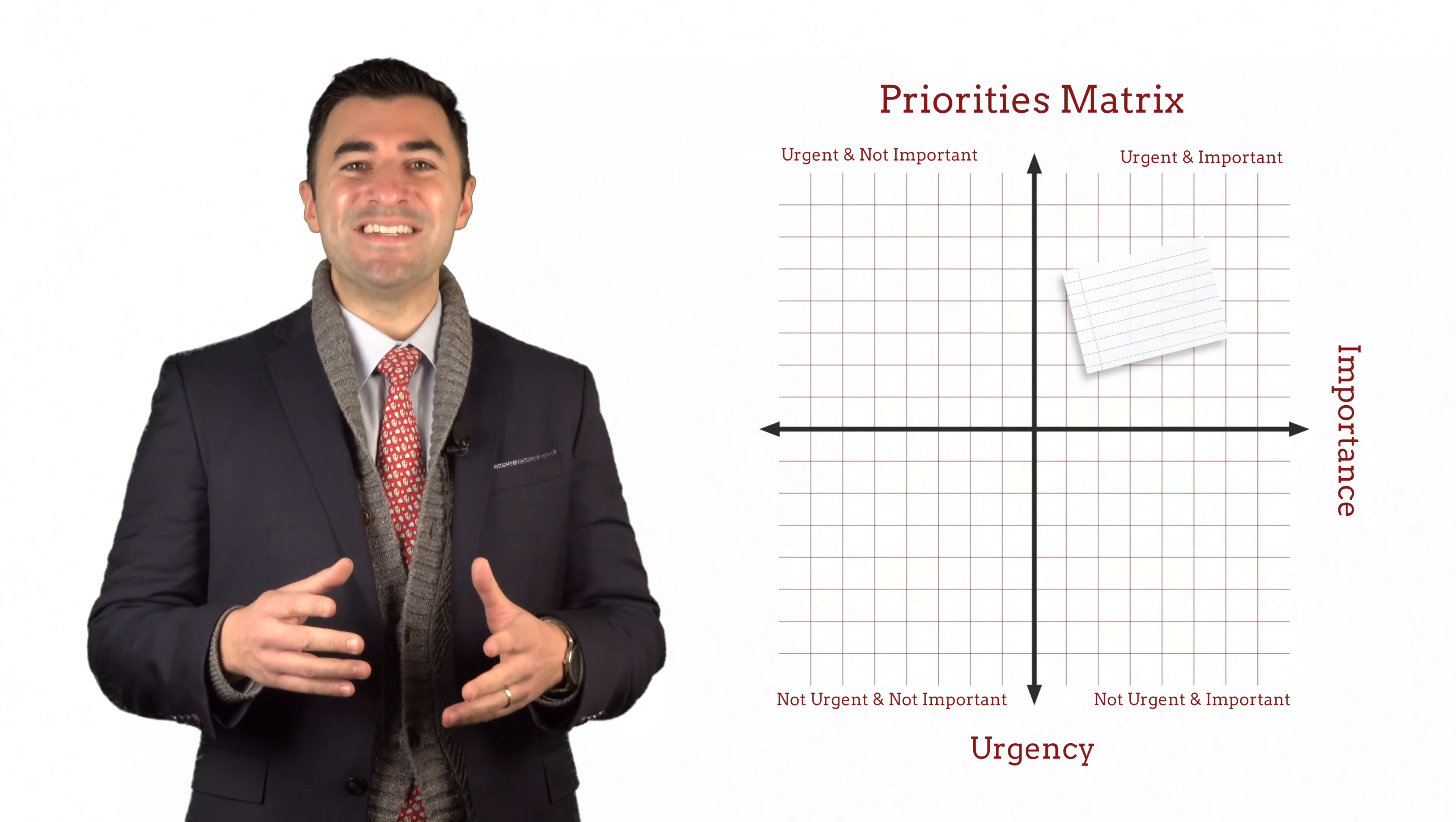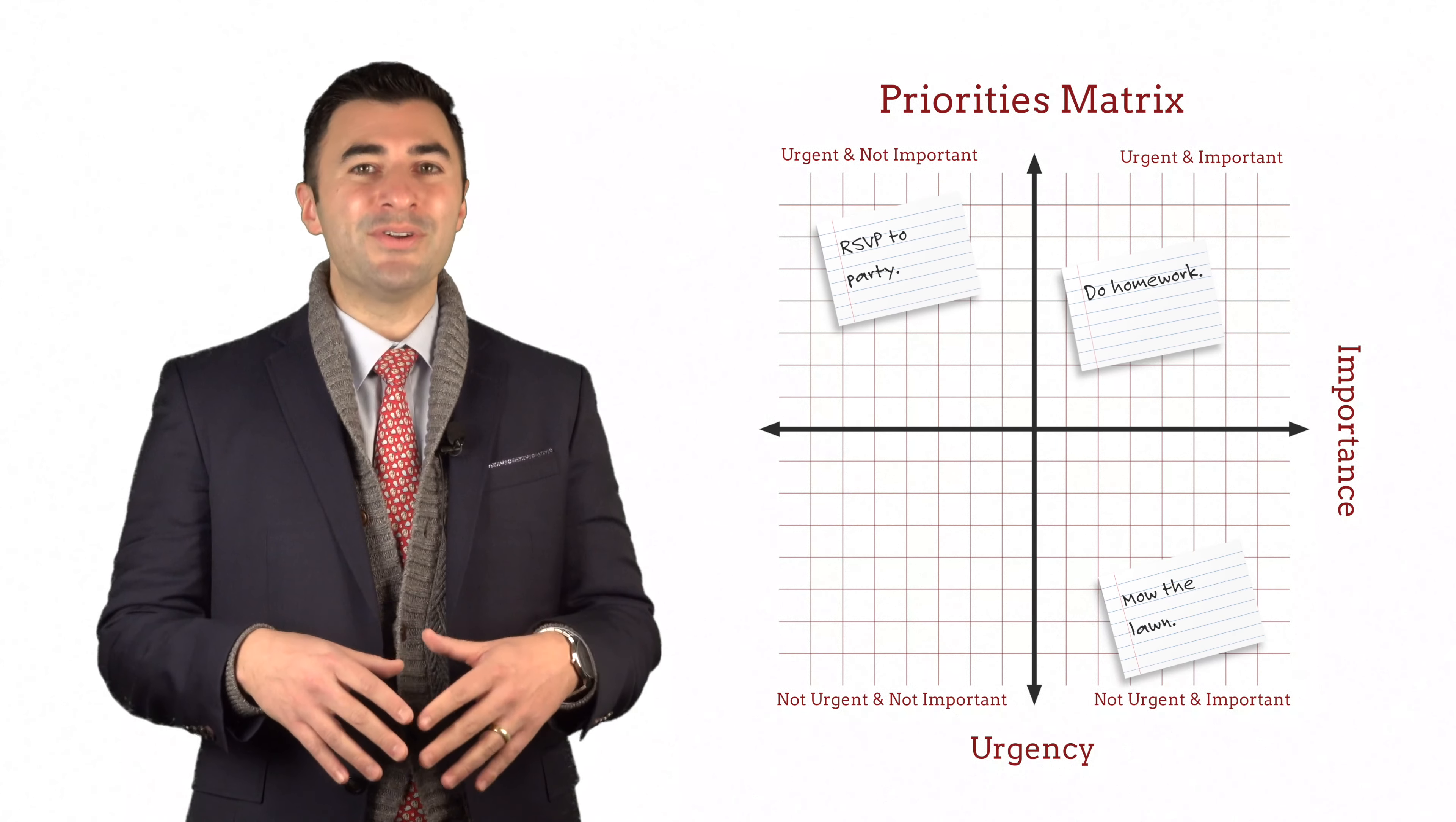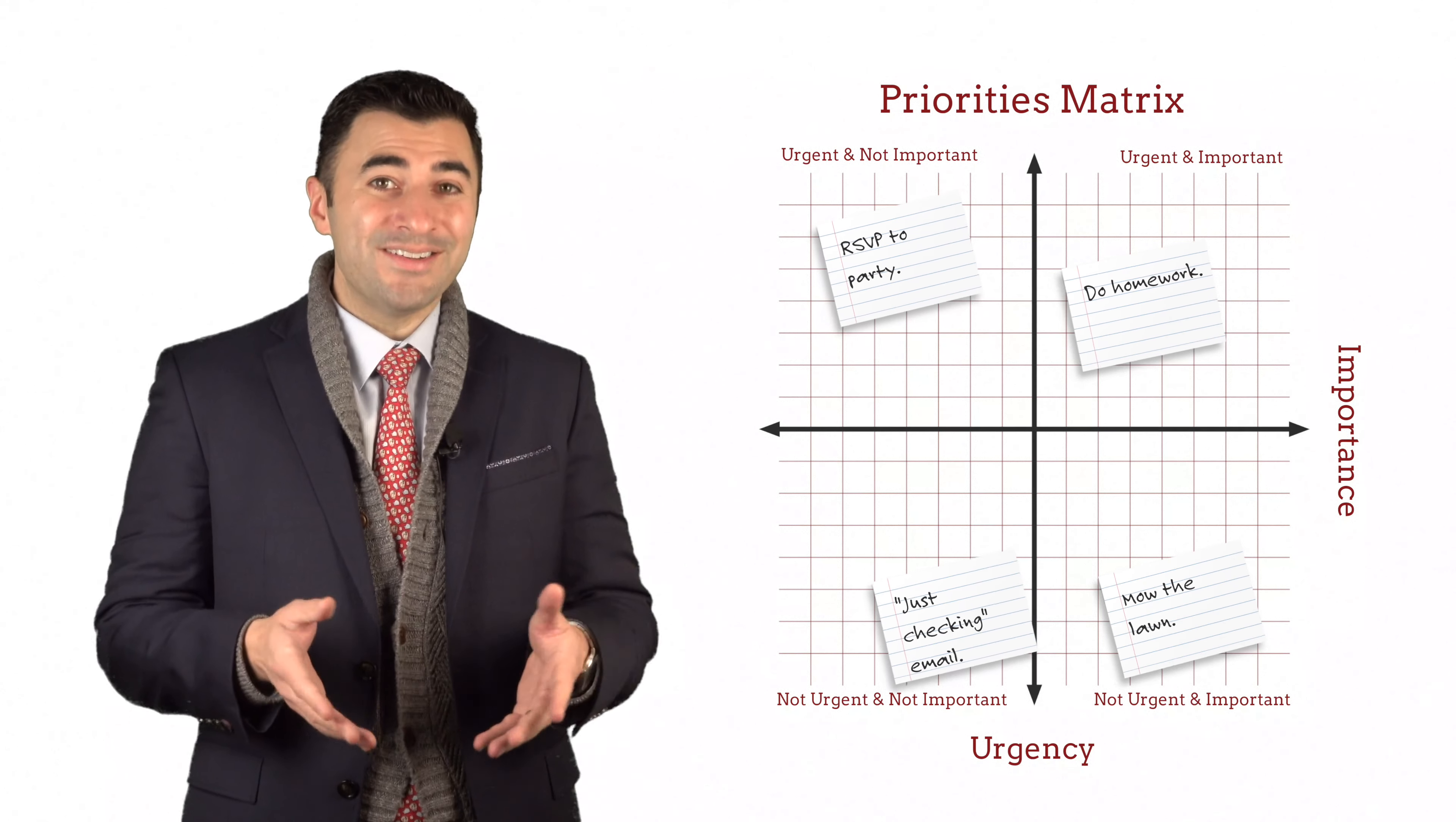Some things need to get done right away and they really matter. Others are really important, but the deadlines are a little ways off. Some tasks need to get done right away but they're not a huge deal, but nonetheless they need to get done. And lastly, there are things you might want to do, but they're neither important nor pressing.